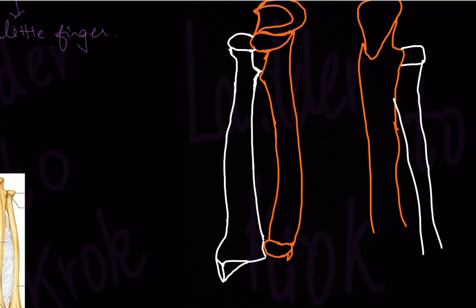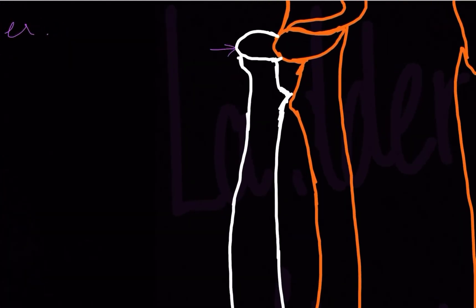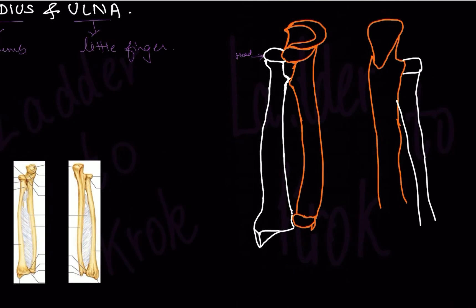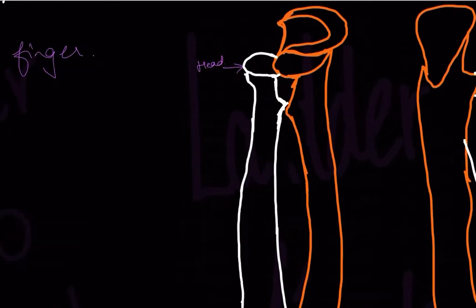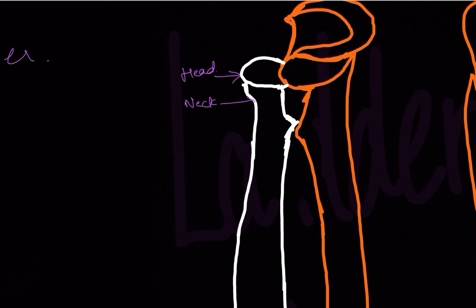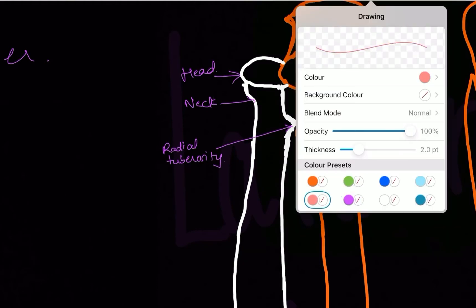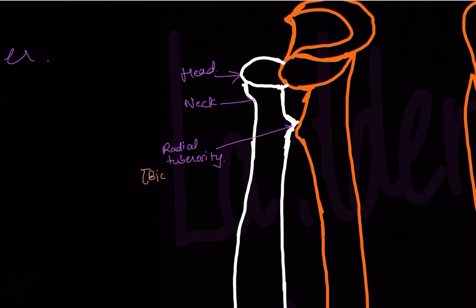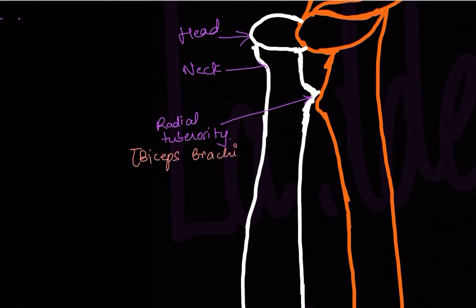Starting with the radius bone: the head of the radius is towards the humeral side — it's proximal. The head of the ulna, on the other hand, is towards your wrist side — it is distal to the trunk. After the head you have a constriction, which is the neck. Then you can see this pointed structure meeting with the ulna — this is called the radial tuberosity. The biceps brachii muscle, which is present in the arm, attaches to this radial tuberosity.